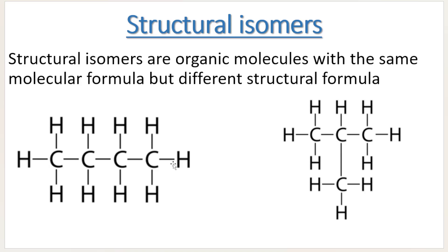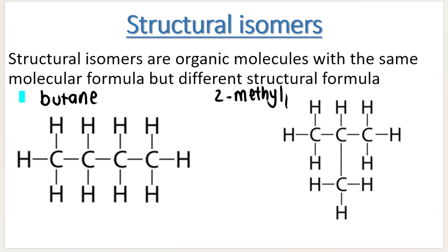They're both alkanes, but this is a straight chain alkane over here and its name is butane — four carbons, butane. And on the right we have a branched alkane. It is 2-methylpropane. So they're both alkanes, different structural formulas, but the molecular formula — C4H10 — both of them have the same molecular formula.